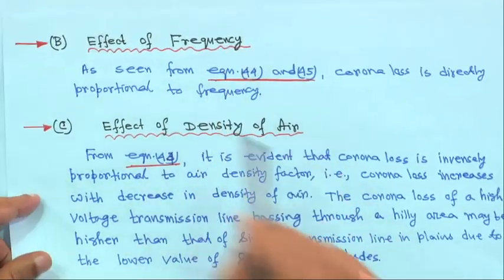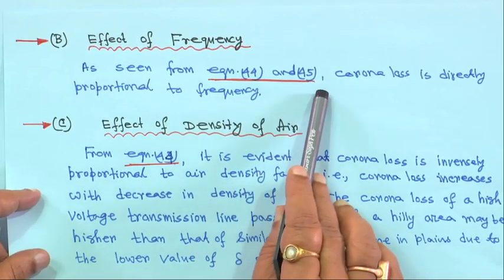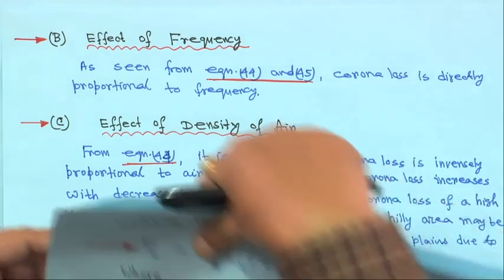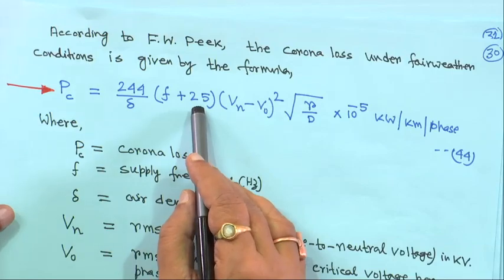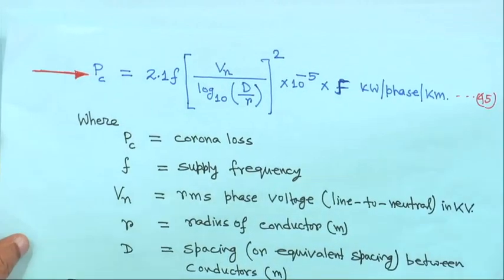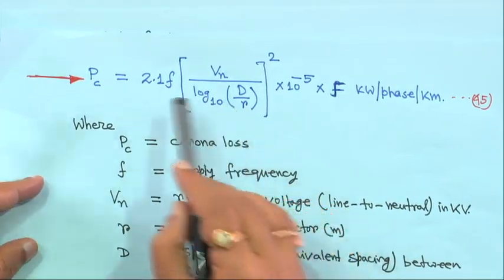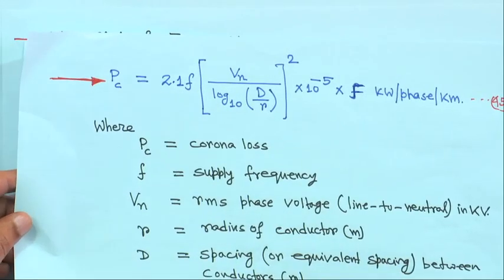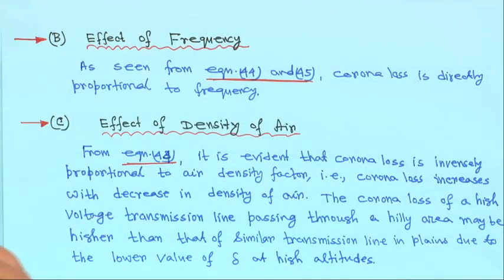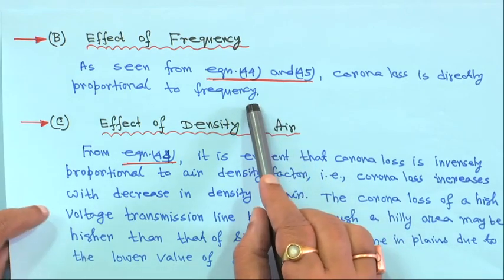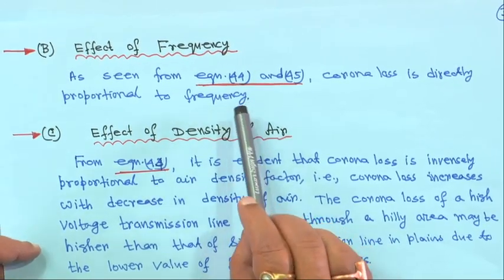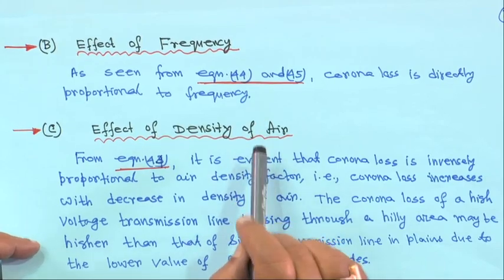Next is the effect of frequency. From equations 44 and 45, corona loss is directly proportional to frequency. In Peek's formula, the term (f + 25) shows this dependence, and similarly Peterson's formula is directly proportional to f. However, in a power network at 50 or 60 Hz, there is not much change from the nominal value — only slight increase or decrease depending on power system conditions.